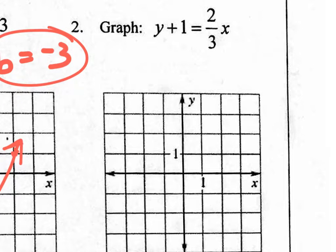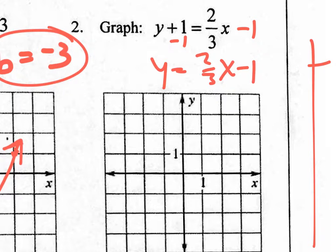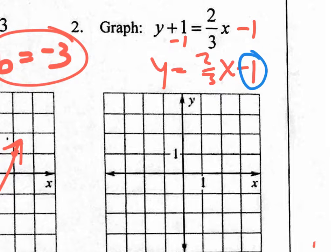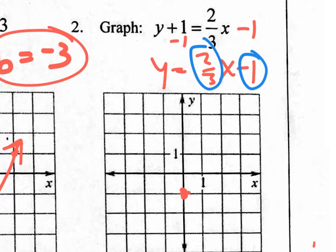For number 2, let's first make sure it's in y equals mx plus B form — get y by itself. Subtract 1 from both sides and you have y equals 2/3 x minus 1. It would be pointless to do an xy table here, so let's just use slope-intercept form. The B value is negative 1 and the slope is 2/3. Go to B equals negative 1 and put a dot there. From that point, go up 2 over 3 — if it's positive 2/3 you go up; if negative 2/3 you go down. The run is always to the right.